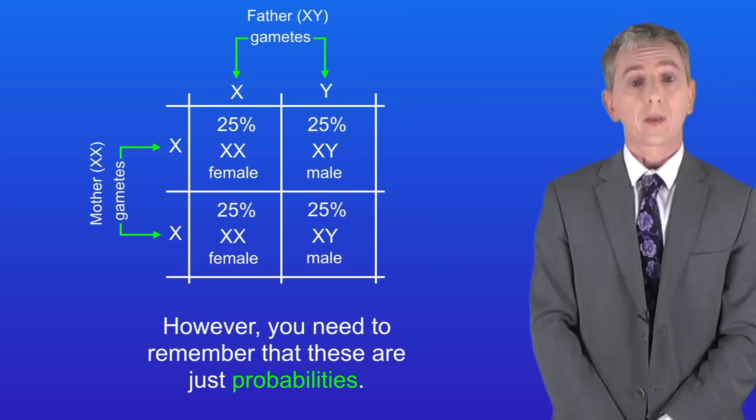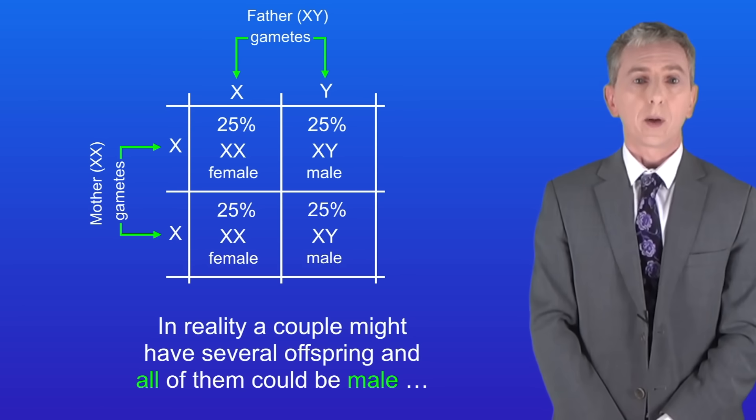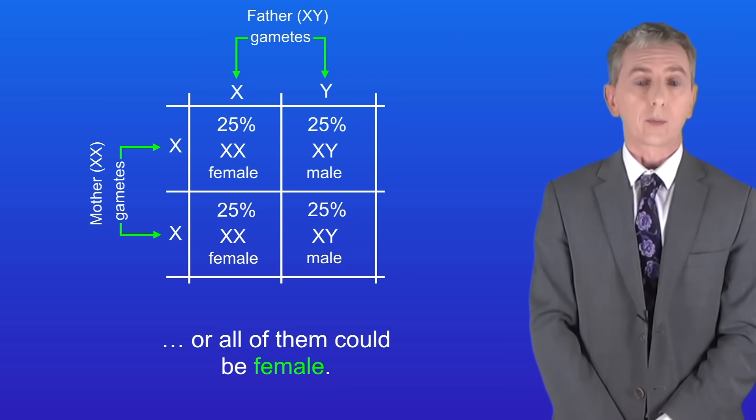However you need to remember that these are just probabilities. In reality a couple might have several offspring and all of them could be male. Or all of them could be female.